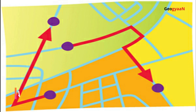Vector files: Vector data consists of vertices and paths. The three basic types of vector data are points, lines, and polygons. Each point, line, and polygon has a spatial reference frame such as latitude and longitude.